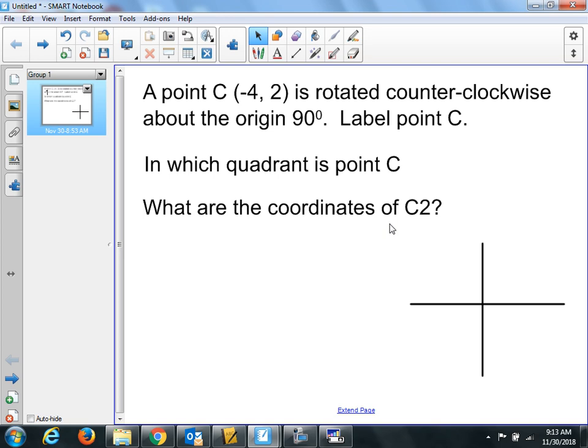A point C, this is like that question, it's a different one. Point C is rotated counterclockwise about the origin 90 degrees. Label the point C first that you start with. So, negative four up to two. I'm going to put down, I'll do this in blue.